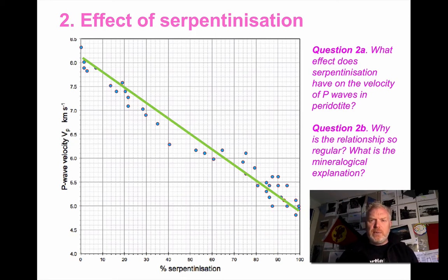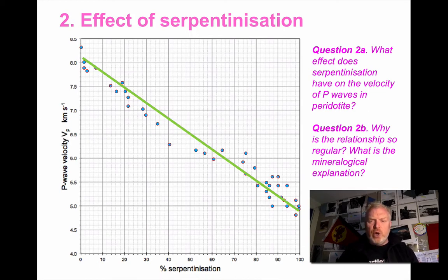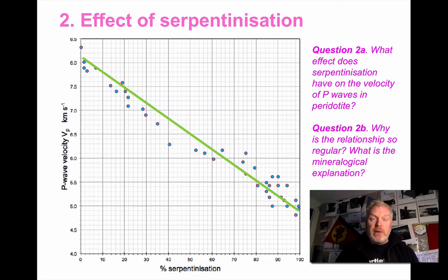A couple of questions to think about. We can see what serpentinization does to the velocity of P-waves. The question is: why? Why is this such a good relationship? What are the mineralogical differences between olivine and serpentinite? Have a think about that — perhaps go look it up and see what you can work out.